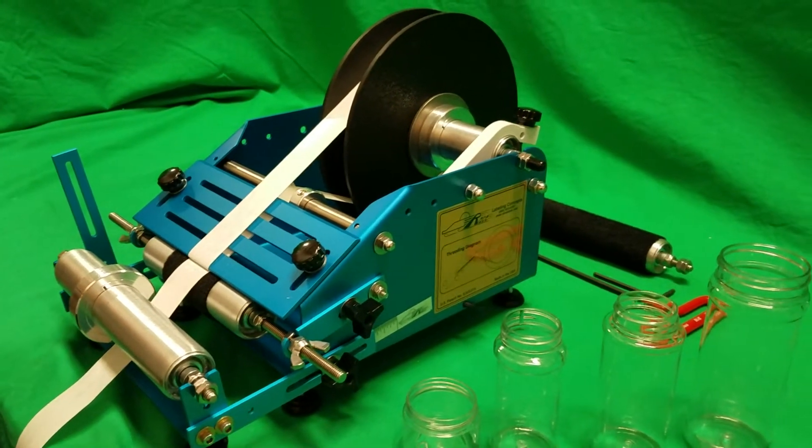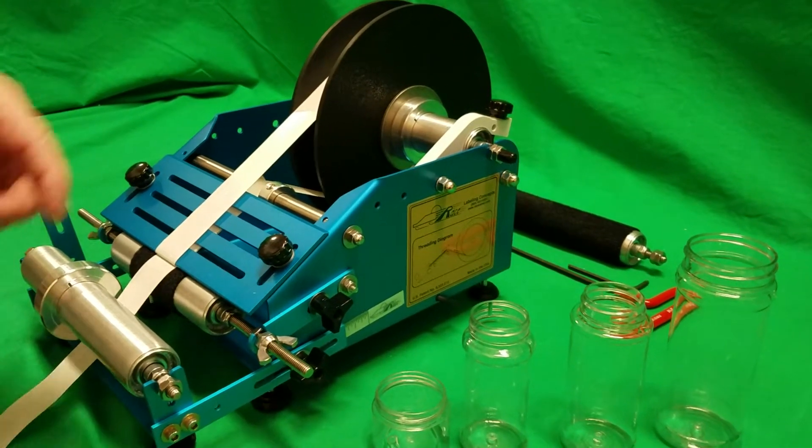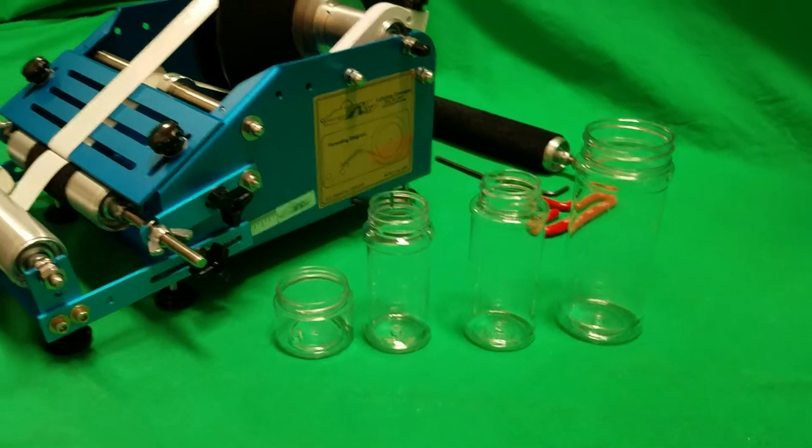This machine is the Race Junior machine. We're going to be using it to apply labels to four different PET jars.